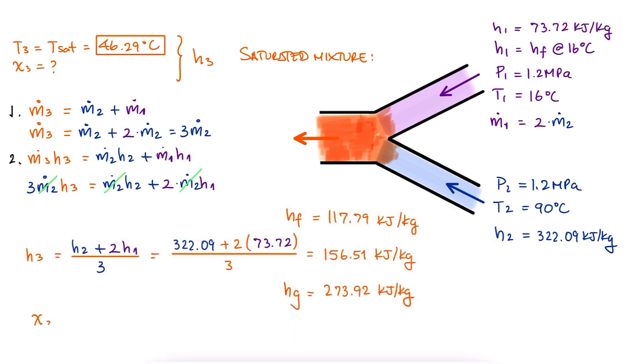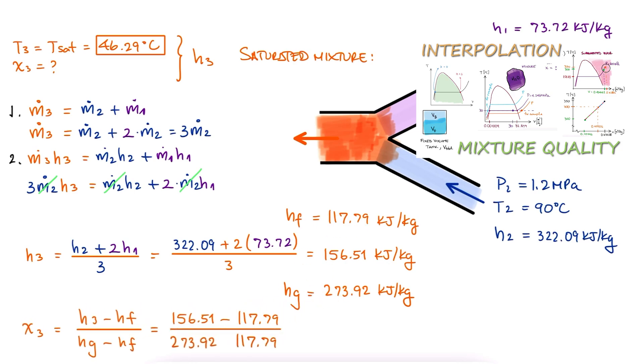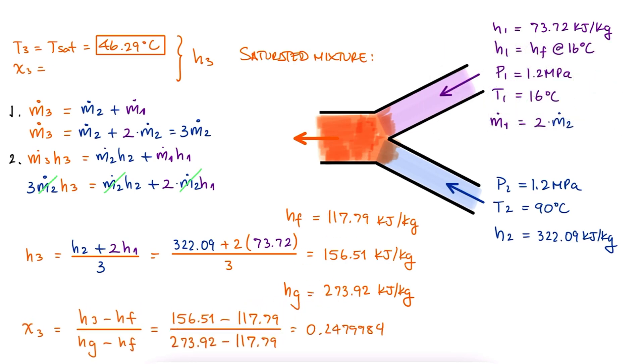As for the quality, we use the expression we derived for it in the quality 9 minute lecture, link below, and find it to be 24.8%. And that fully describes our state at the exit.